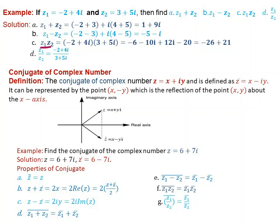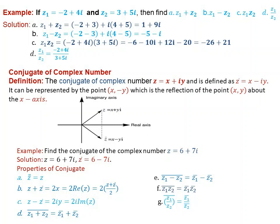For z1 times z2: minus 2 plus 4i times 3 plus 5i equals minus 6 minus 10i plus 12i plus 20i-squared equals minus 6 plus 2i minus 20 equals minus 26 plus 2i. For z1 over z2: minus 2 plus 4i over 3 plus 5i — multiply by conjugate and simplify.